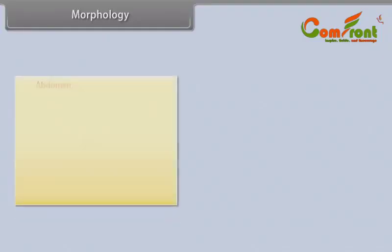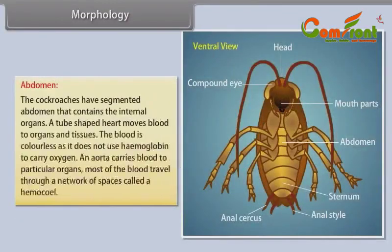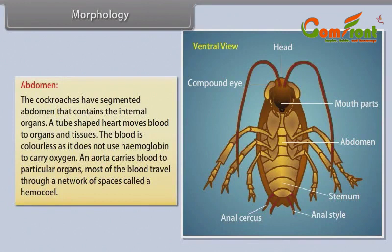Morphology — Abdomen: The cockroach has a segmented abdomen containing the internal organs. A tube-shaped heart moves blood to organs and tissues. The blood is colorless as it does not use haemoglobin to carry oxygen. An aorta carries blood to particular organs, and most blood travels through a network of spaces called a haemocoel.